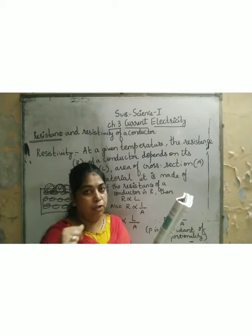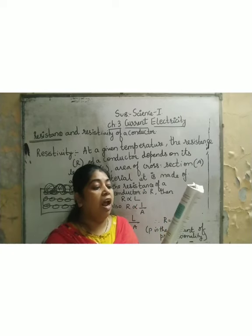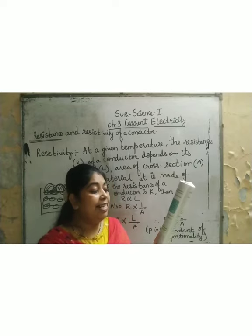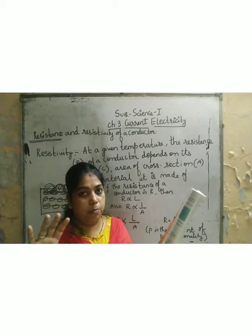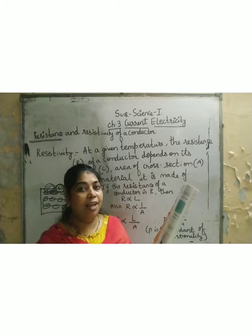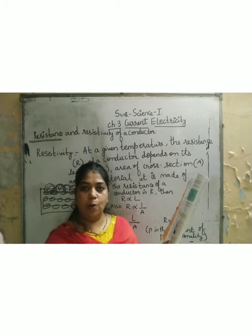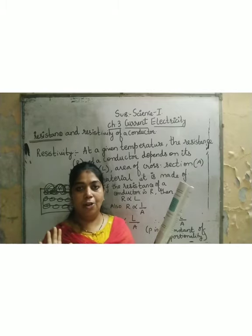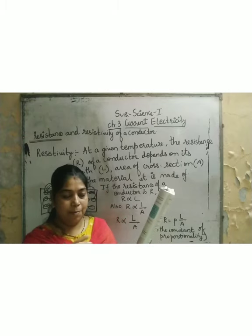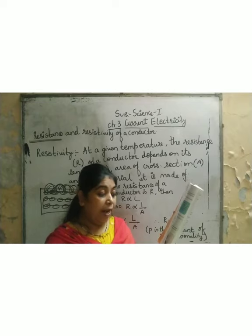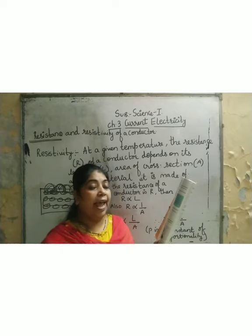As shown in the collision figure, when a potential difference is applied between the two ends of the conductor, these electrons start moving from the end at the lower potential to the end at the higher potential.